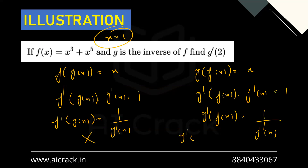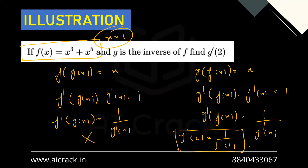So g'(2) = 1/f'(1). Computing f'(x) = 3x² + 5x⁴, so f'(1) = 3 + 5 = 8. Therefore g'(2) = 1/8. This is straightforward once you identify which inverse function formula to use. That's where this lecture ends — in the next lecture we'll cover a few more methods. Thanks for watching.